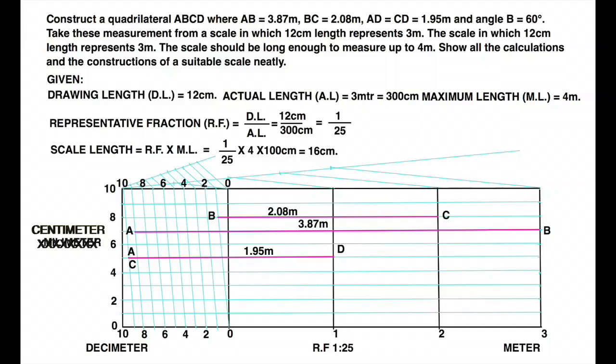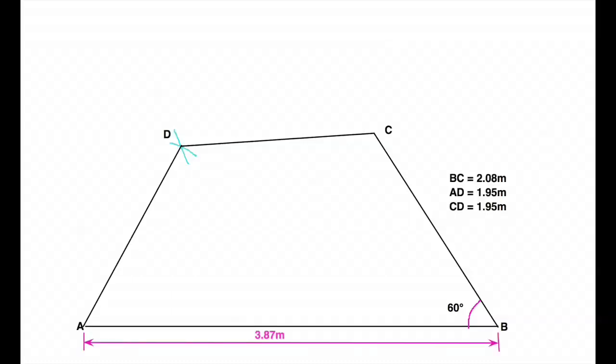Now we will draw line AB. From B we will take angle. We will mark BC. Now from C we will cut D and from A we will cut D. So CD and AD. So we will draw this required quadrilateral and we have to show the dimensioning.